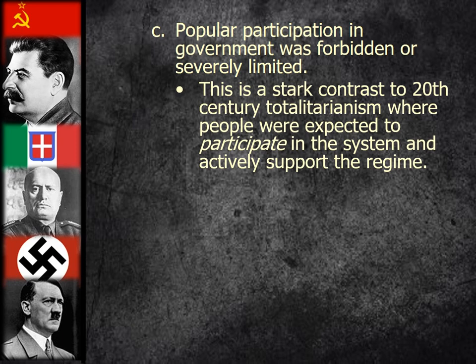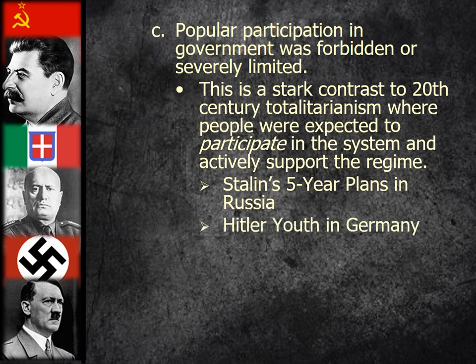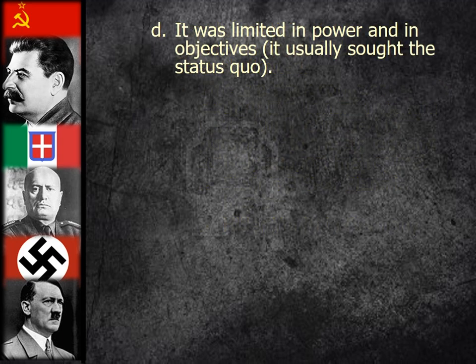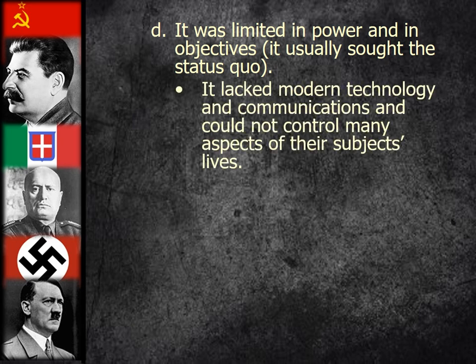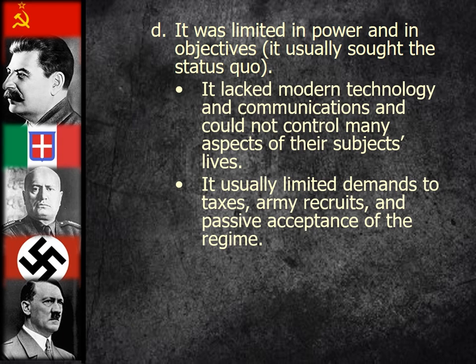Popular participation in government was forbidden or severely limited under conservative authoritarianism. This is in stark contrast to 20th century totalitarian governing forces, where people were expected to actively participate in the system and support the regime — no ifs, ands, or buts. You must participate in accordance with the will of the dictator. Stalin's five-year plans in Russia and the Hitler Youth in Germany are examples of this.